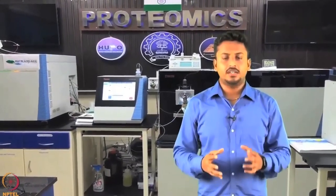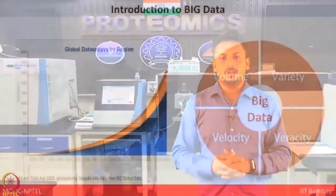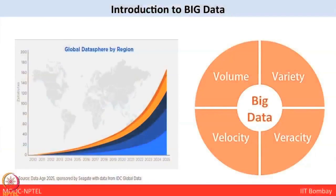The amount of data we are generating is huge, and we frequently use the term 'big data.' The term has been used since the 1990s and was given by John Masche. Big data usually includes datasets with sizes beyond the ability of commonly used software tools to capture, curate, manage, and process data within a tolerable elapsed time. Big data comes with the 4Vs: volume, variety, velocity, and veracity.